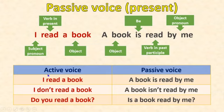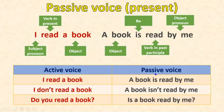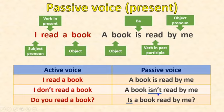Now let's look at this table. We have active voice — normal sentences — and passive voice. For example: 'I read a book' → 'A book is read by me.' 'I don't read a book' → 'A book isn't read by me.' And the question: 'Do you read a book?' → 'Is a book read by me?' So we have positive, negative, and question forms. In negative, the auxiliary is 'isn't'; in questions, we invert.